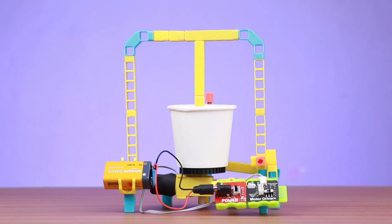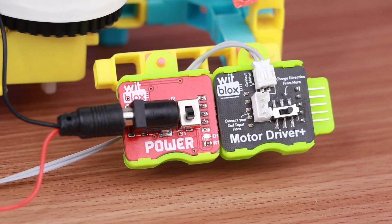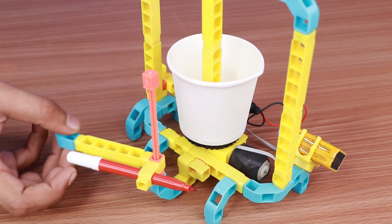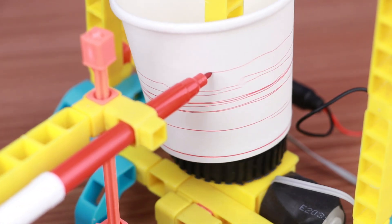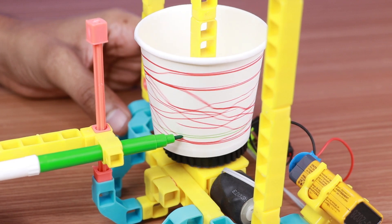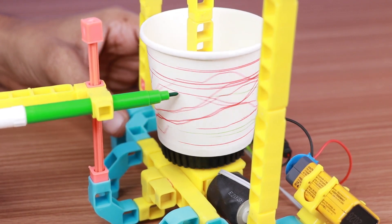Today we are going to build a robot that will create beautiful designs using a motor-driven mechanism. The mechanism is of a glass painter that can draw cool designs on the glass surface. It can create patterns with multiple designs and colors. Let's get started.